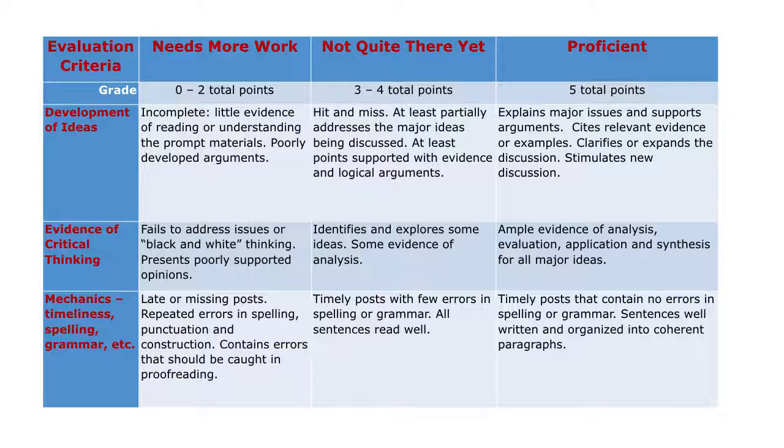If there are mistakes in spelling or in grammar, if sentences haven't been proofread and don't read well, if sentences are incomplete, if your answer only addresses part of the question or is not fully supported with evidence and logic and examples, then you're going to get less than five points. Generally, people are going to get three to four points in those cases.